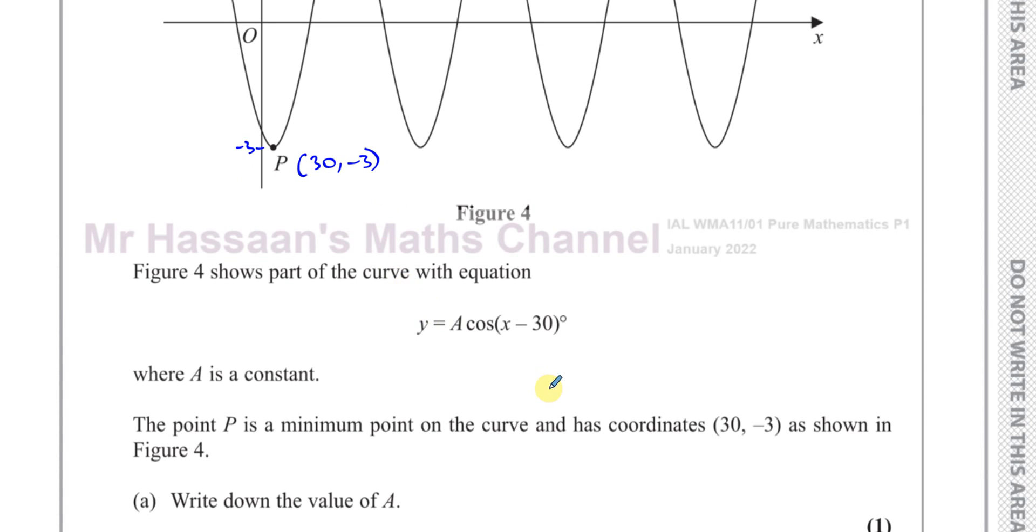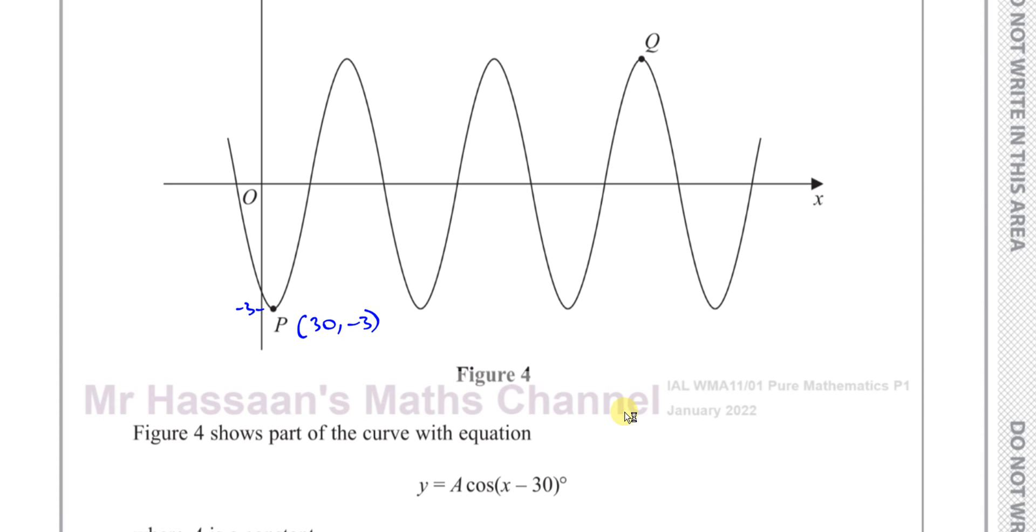Write down the value of a. Now we can see that this is a transformation of the cosine curve. This is of the form y equals something times f of x. For example, a times f of x minus 30. So the a is something that's multiplying the whole function. We know that the cosine curve, its maximum value is normally 1 and its minimum value is normally negative 1.